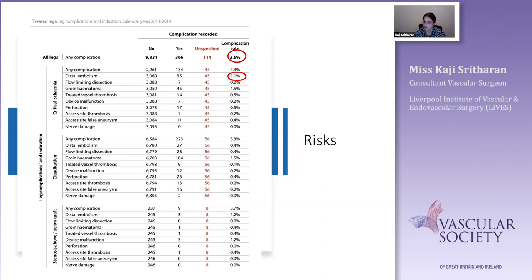It's worth noting that whilst the complication rate is low, there is a complication rate. If you are treating claudicants, you have to counsel patients that there is approximately a one percent risk of distal embolization and limb loss.